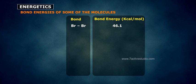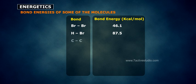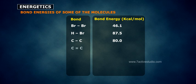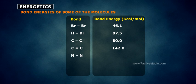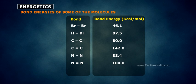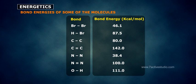Continuing the bond energy table (in kcal/mol): 65.0; C=C (double bond): 165.0; C=C: 142.0; N–N (single bond): 38.4; N=N (double bond): 100.0; O–H: 111.0.